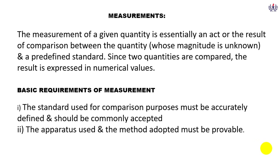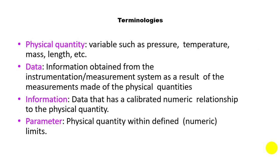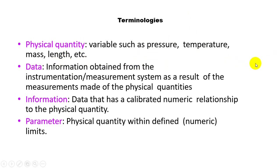Some terminologies to keep in mind: a physical quantity is a variable such as pressure or temperature, which changes with respect to time — for example, temperature is low in the morning, reaches maximum at midday, then reduces at night. Mass also varies between planets, and length is a physical quantity that changes from place to place.